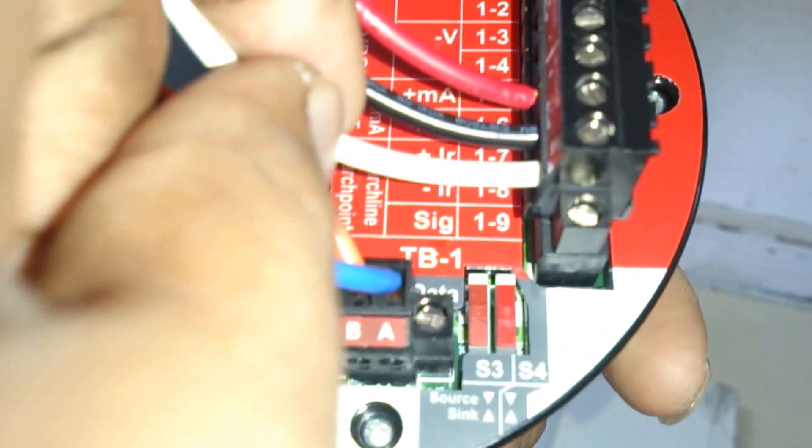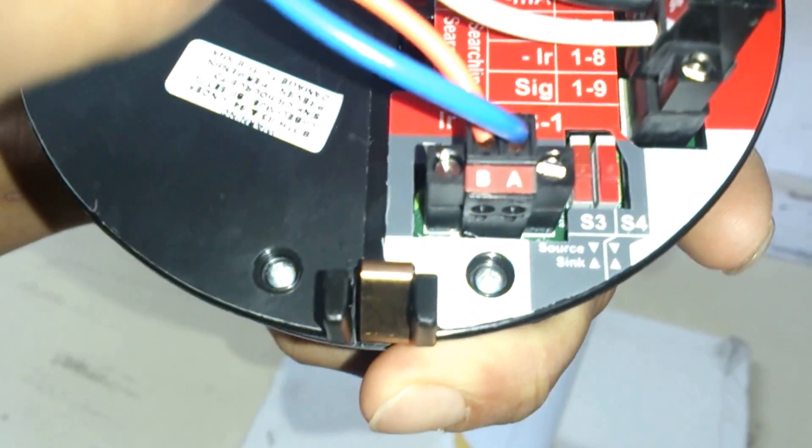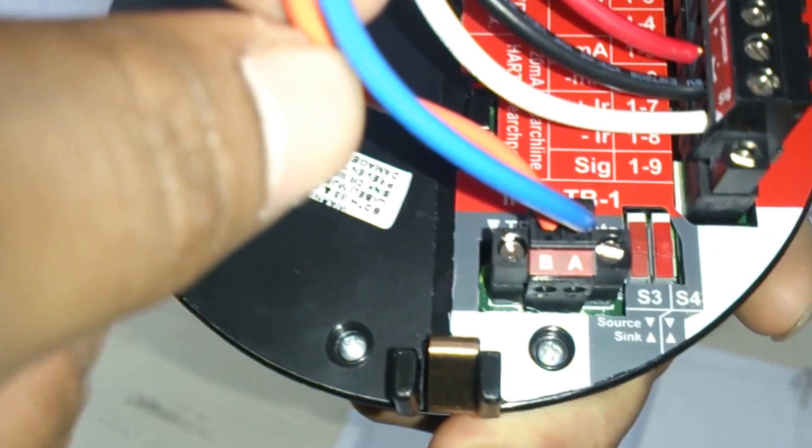Next we have the white cable that is the signal cable which goes to the sensor. Next we have RS485 communication cable, that is the orange and blue one.